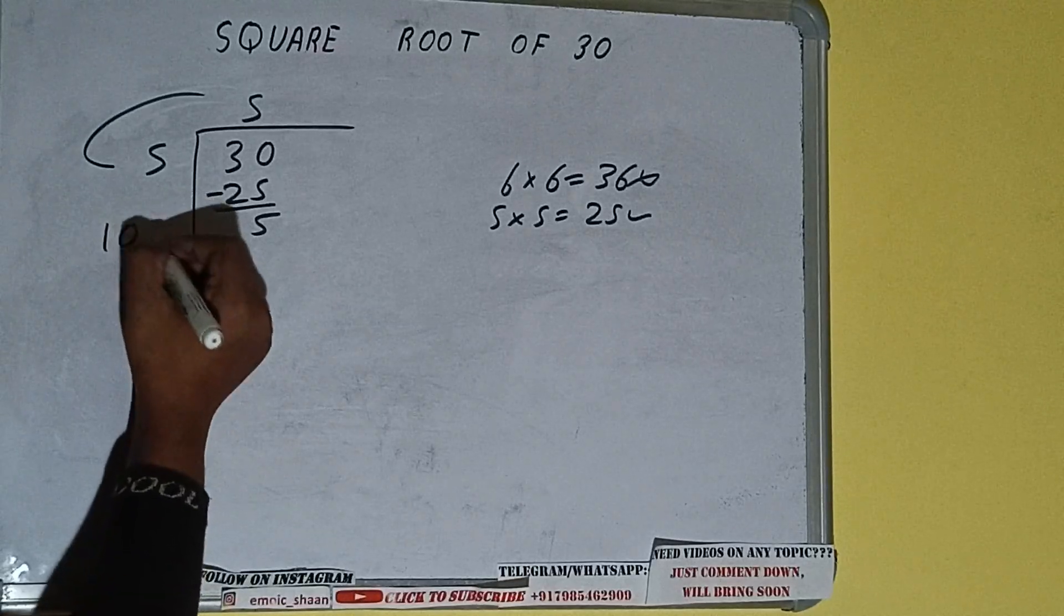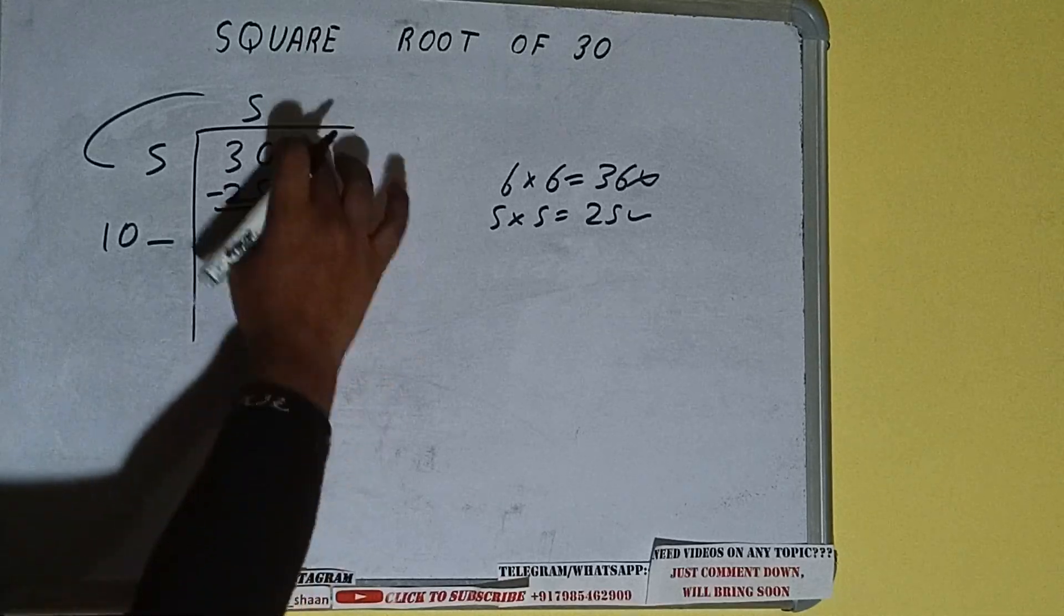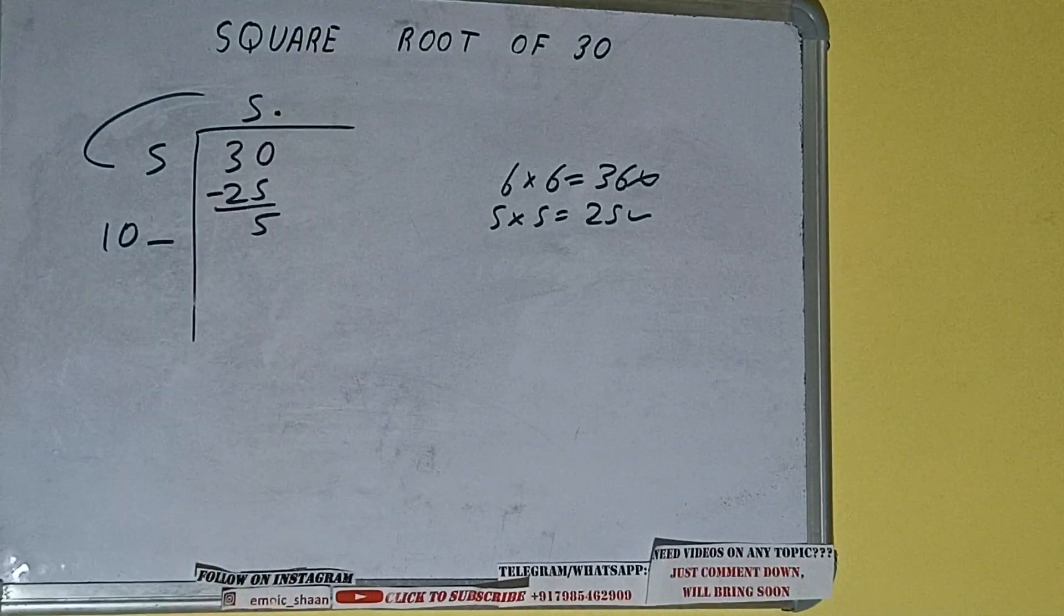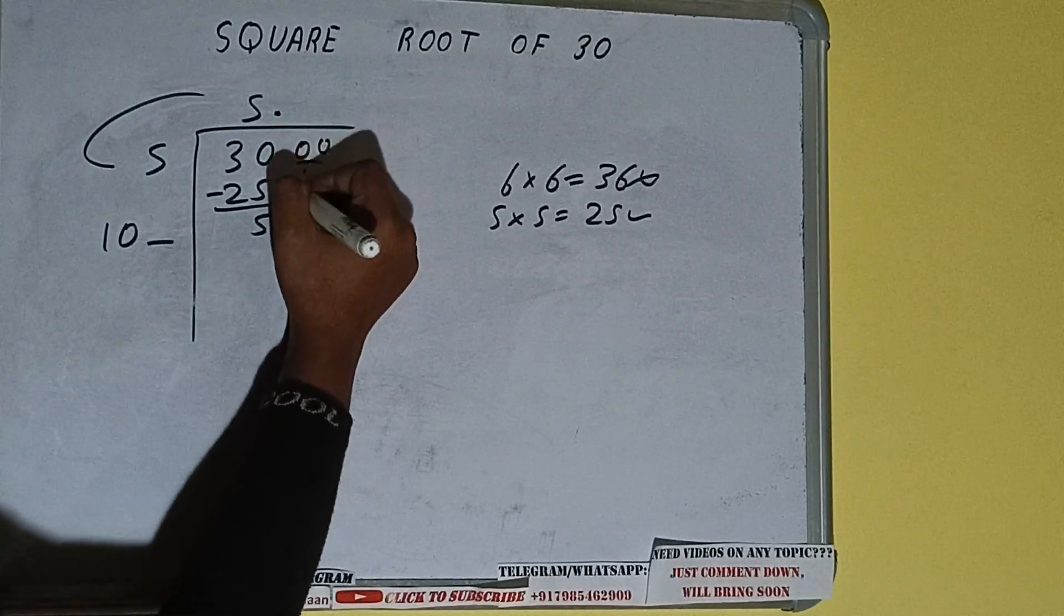Write it here and keep a digit extra, and this number we need to make it big. But we don't have more pairs, so we'll put a decimal. Once we put a decimal, we can bring a pair of zeros down and the number